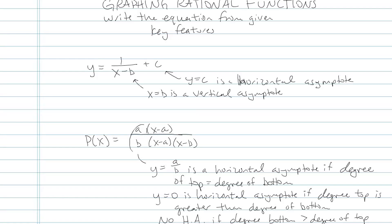Although it's useful to be able to draw a graph given an equation, it's also important to be able to go the other way. Meaning if you're given a graph or if you're given some key features of a rational function or any kind of function, you should be able to write a pretty good idea of what that equation would look like. That's what we're going to be working on here, writing the equation from given key features.